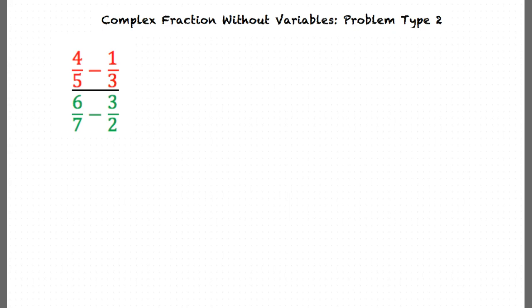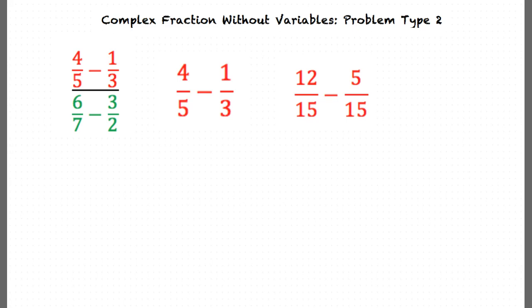Once again, we start by simplifying the numerator. We need to find the common denominator, which will be 15. We find the common denominator by finding the greatest common factor between the two denominators. From here, we multiply each fraction by a form of 1, such as 3 over 3 times 4 over 5. By doing these steps, we will get 12 over 15 minus 5 over 15, which simplifies to 7 over 15.